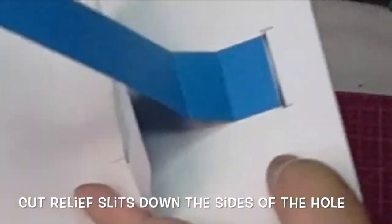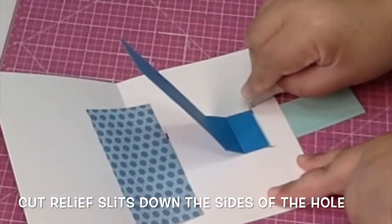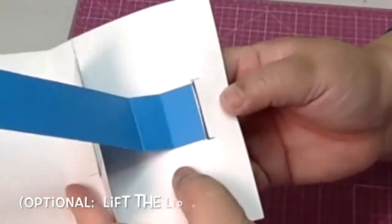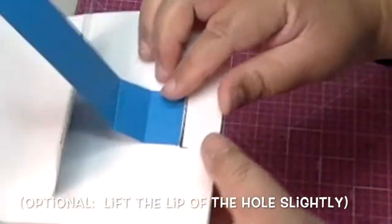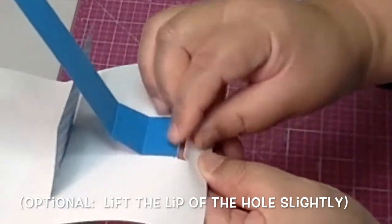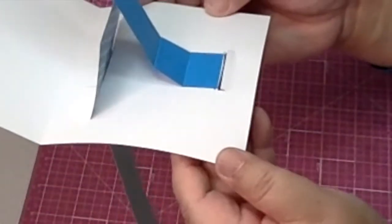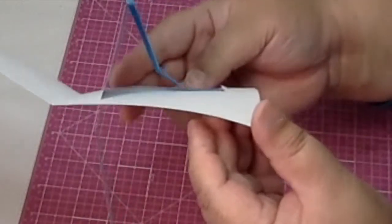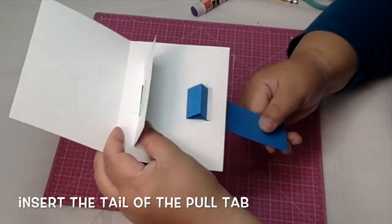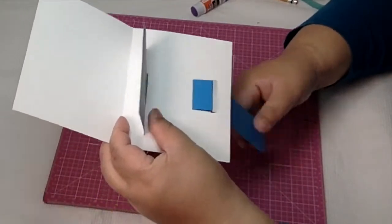And then you just cut relief slits down the sides of the hole like this. You can now lift up that lip of the hole just to make it easier for the pull tab to slide back and forth through that hole. So there it is, and now you can push the tail through the hole and now you have your pull tab.